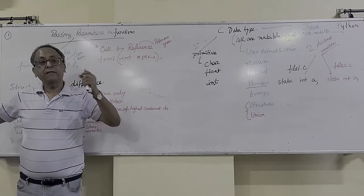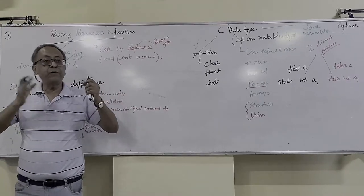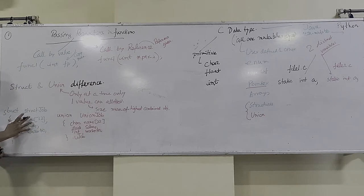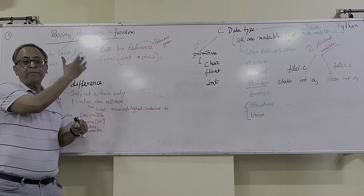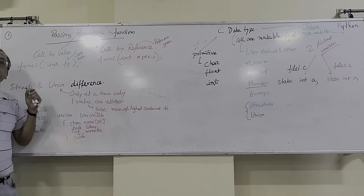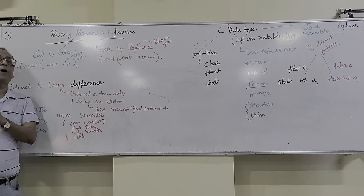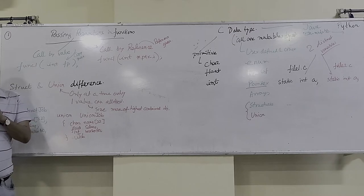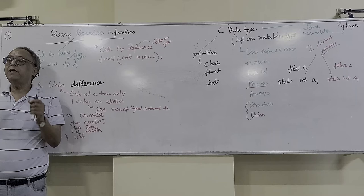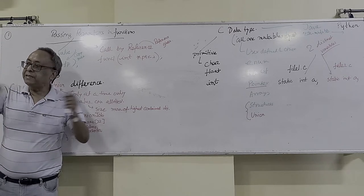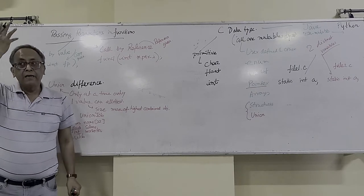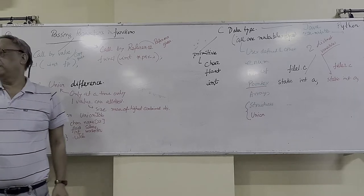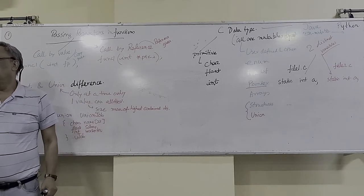C doesn't have a class definition. In C we have only the structure — we do not have associated functions; those need to be in a class definition. C++ does have it, Java does have it, Python does have it — that is object-oriented programming. Procedural programming is still the base because 99-100% of Java virtual machines and Python are made in C and C++.